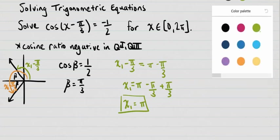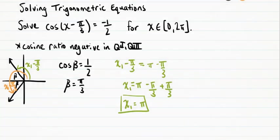I do a similar thing to solve for x2. We have x2 minus pi over 3 equal to where this orange arc is, pi plus beta, so pi plus pi over 3.